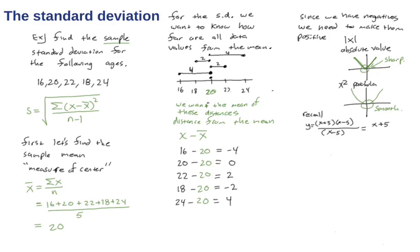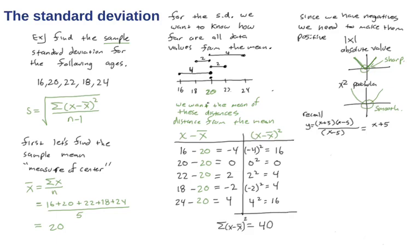Let's go ahead and square everything that way it makes everything positive. Now that's going to allow us to add everything up. Here's our summation of x minus x bar quantity squared which we're going to get 40.